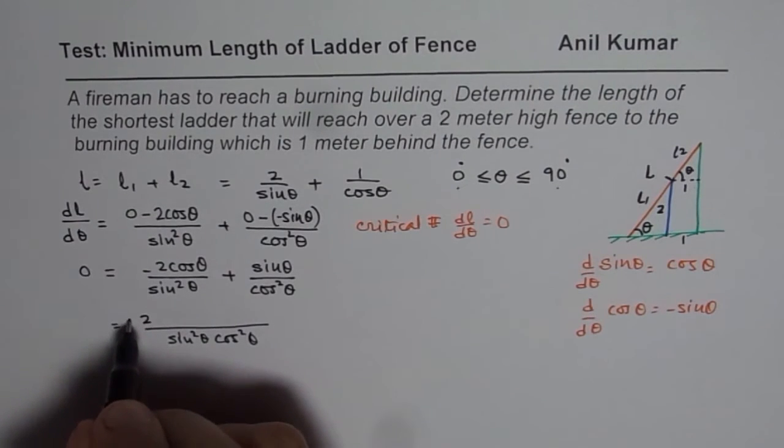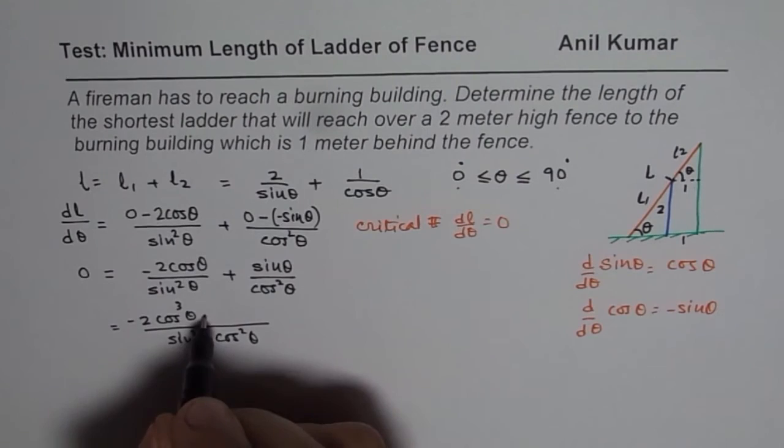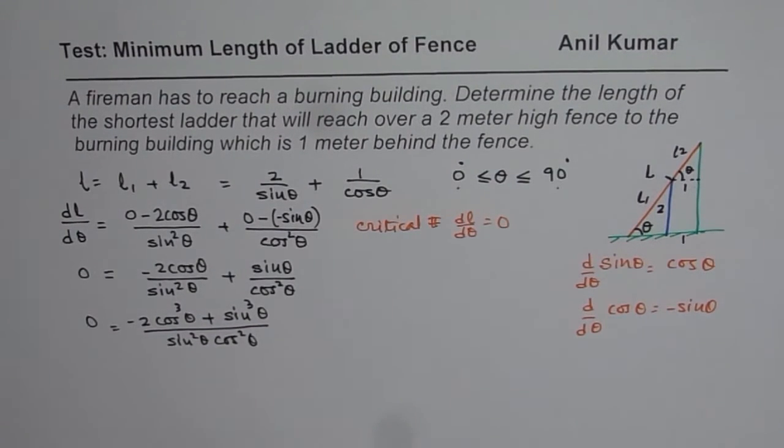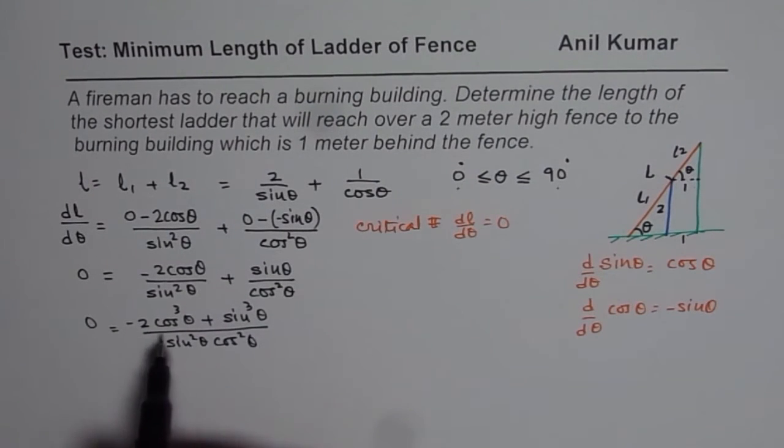And here we will get -2 cos cube theta plus sin cube theta. All that should be equal to 0. Now for this to be 0, numerator should be 0. So numerator will be 0.